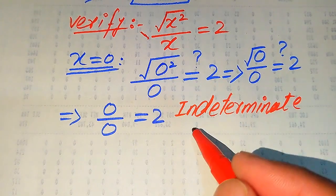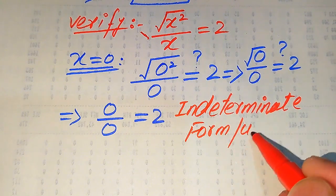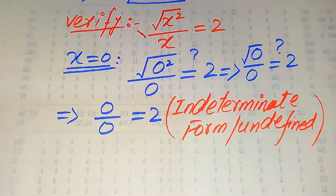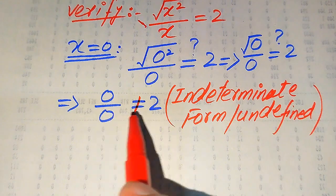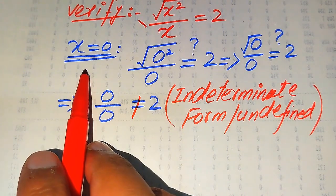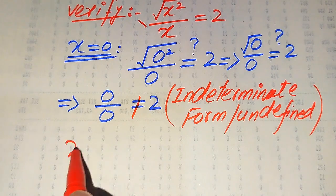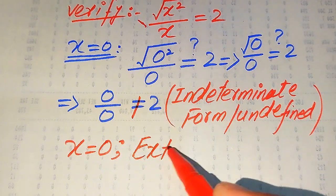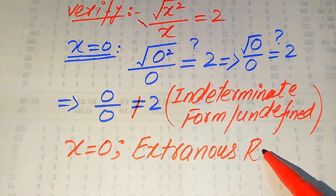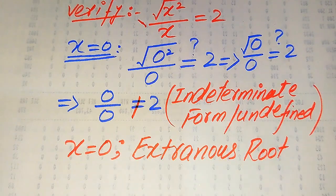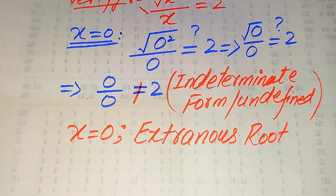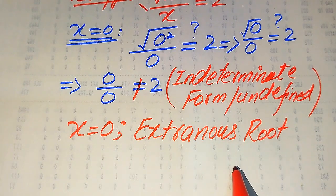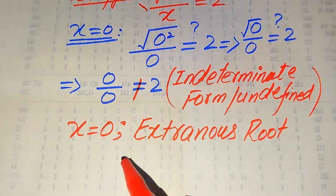This is an indeterminate form — in other words, it is undefined. If the left hand side is undefined, both sides are not equal. Since both sides are not equal, x equals 0 does not satisfy our given equation. Since we cannot get any other value of x and this one does not satisfy the equation, we conclude that this equation has no solution.